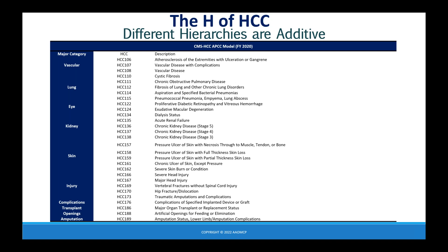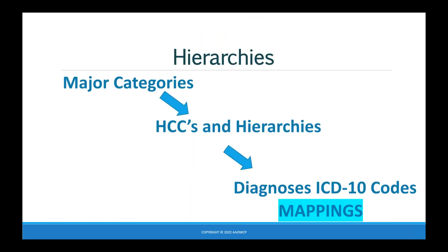The 26 major categories break out into 86 HCCs with their different hierarchies. Diagnosis codes determine which HCCs apply — those mappings are in the essential resources section. So the structure goes: major categories drill down to HCCs and hierarchies, and those are determined from diagnosis codes.